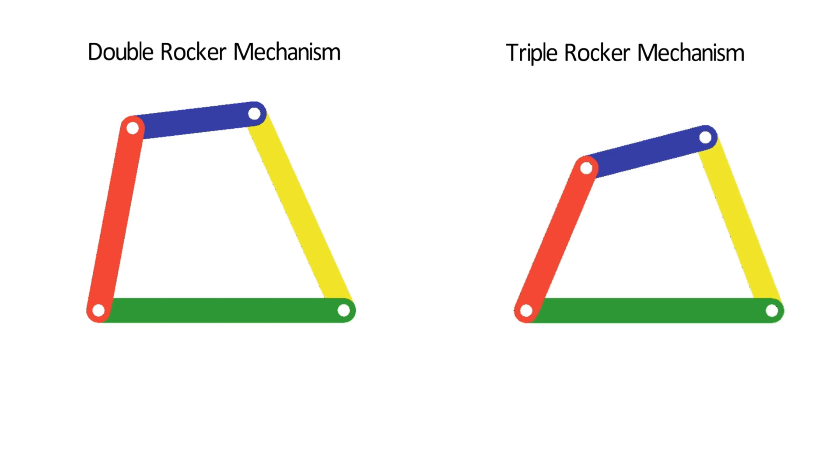Double rocker mechanism is the Grashof linkage, for which the sum of the links of the smallest link and the largest link, is less than the sum of the links of other two links.